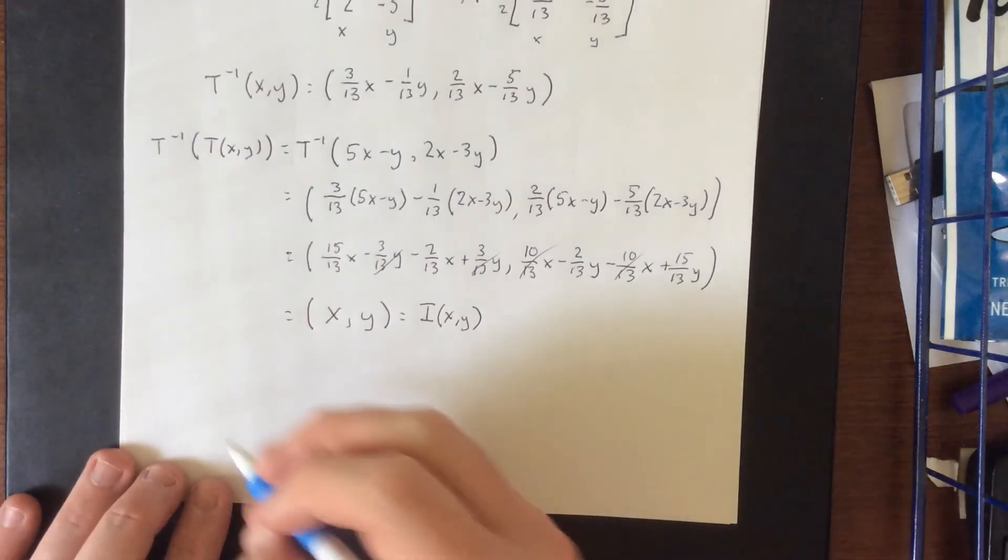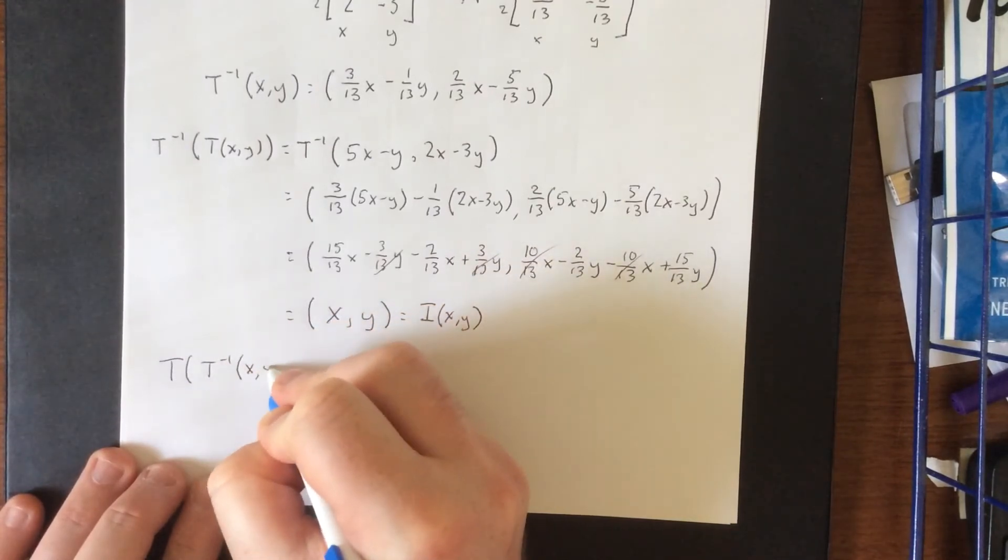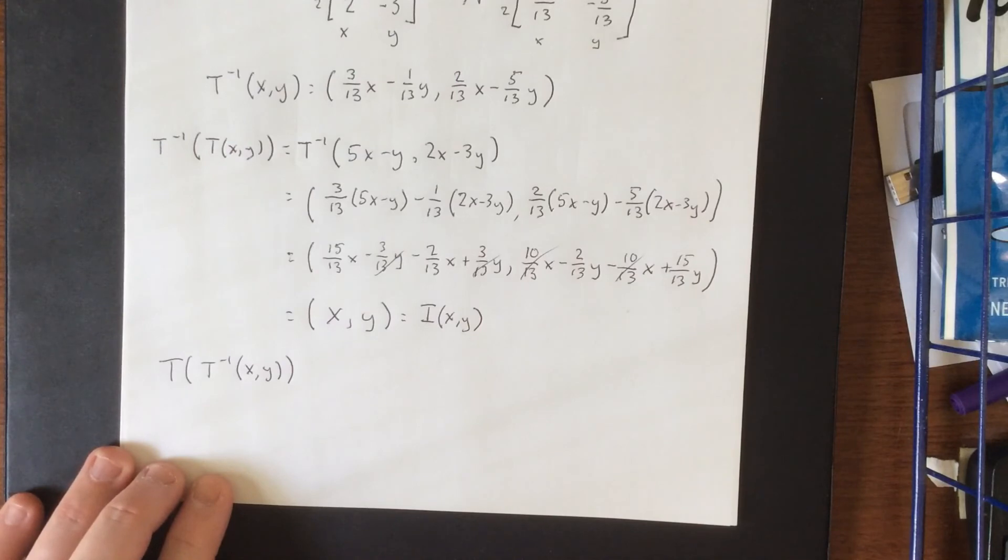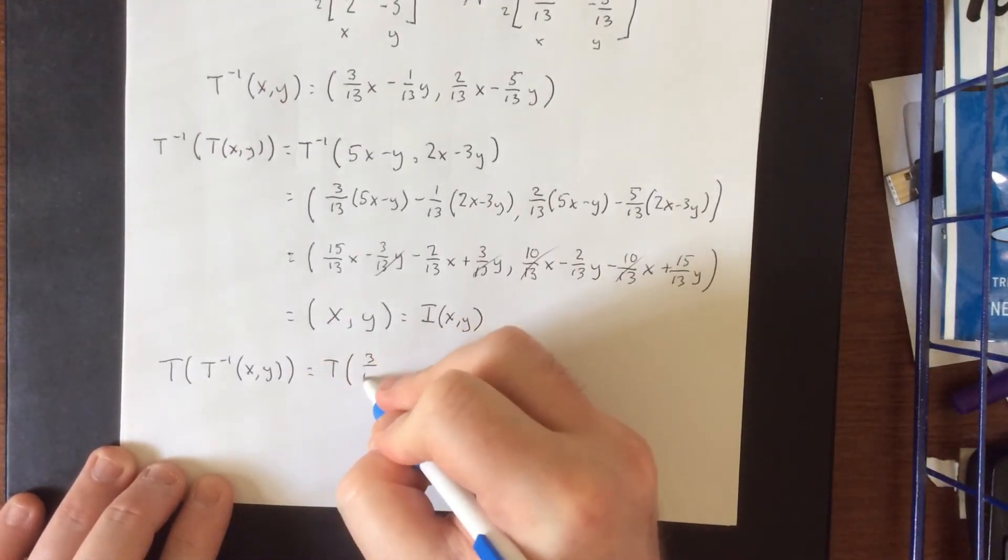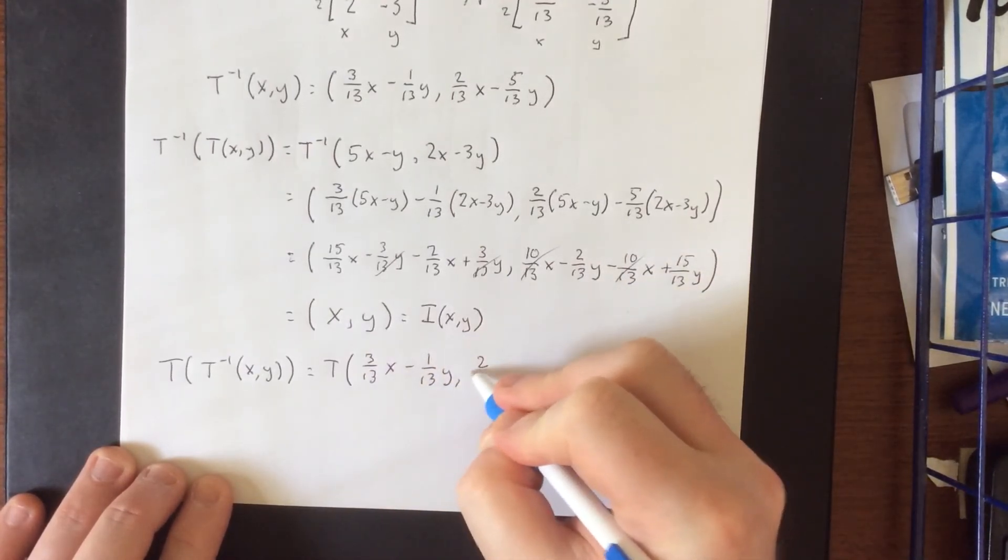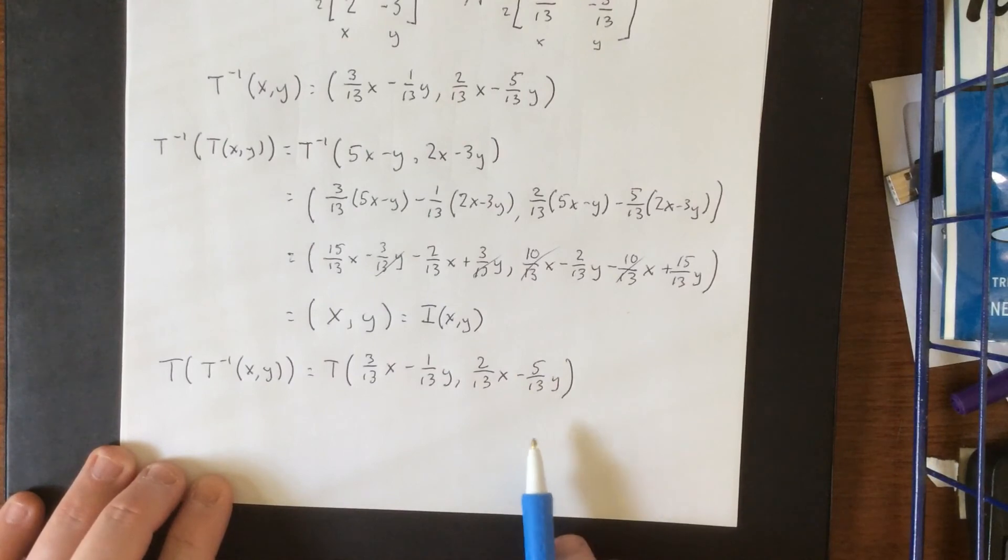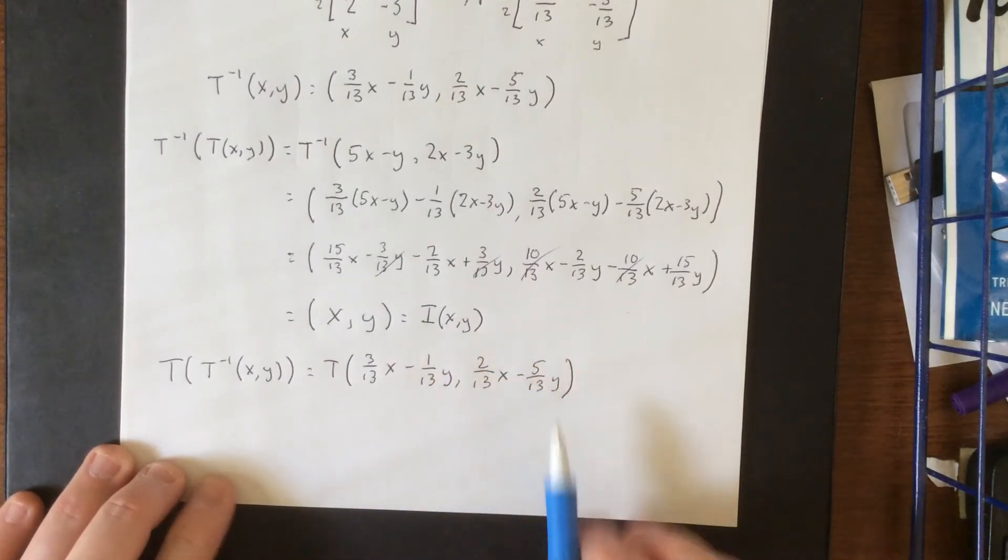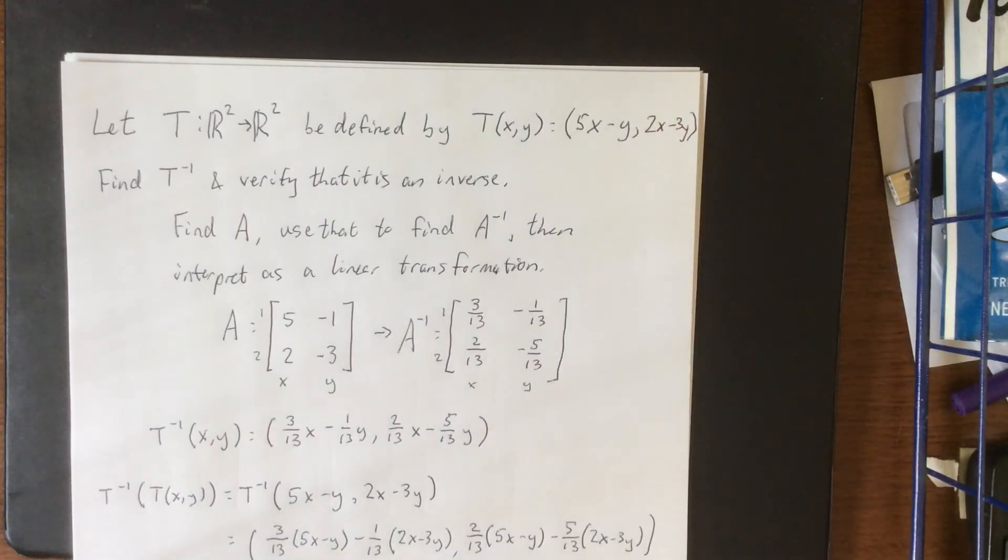Now for this one, I do want to leave you hanging. What I would like you all to try out is see if you can reverse this process by finding T of T inverse of (x,y). I'll get you started. This means that you'll be finding T of 3/13 x minus 1/13 y and 2/13 x minus 5/13 y. See what happens when you plug this input into the original function T and see if you also get the identity transformation. Spoiler alert! You will, as long as you're doing it right.